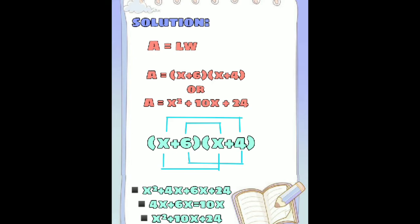By substitution, A equals x plus 6, which is the length from the given, times x plus 4, which is the width. Or it can be A equals x squared plus 10x plus 24. Why did it become like that? Because when you simplify it, it becomes x squared plus 10x plus 24. So if you know how to simplify, it will be easier to identify.